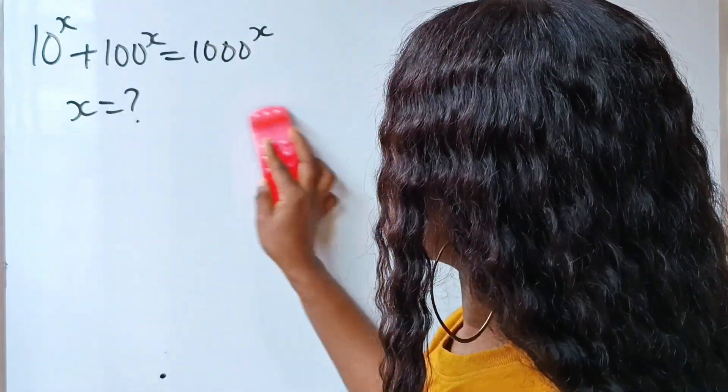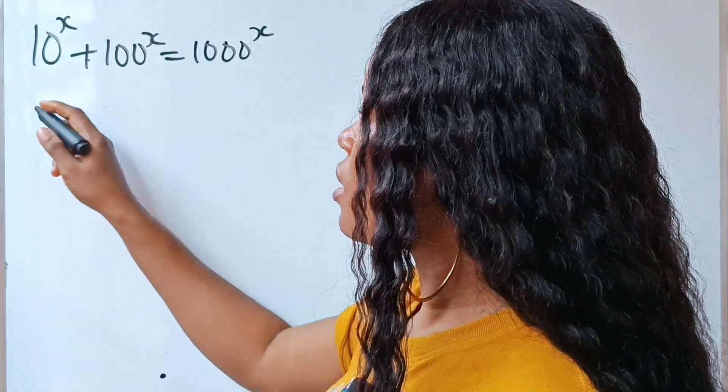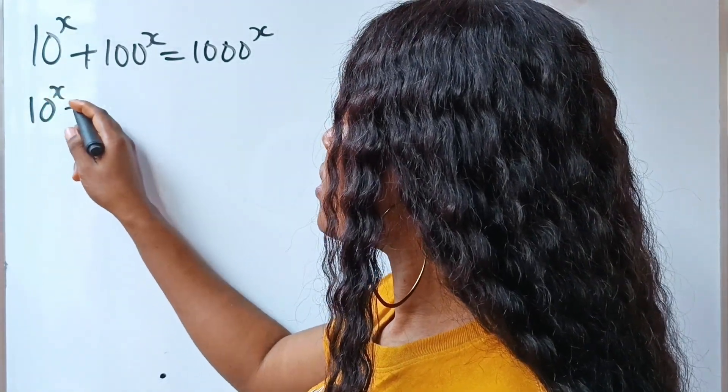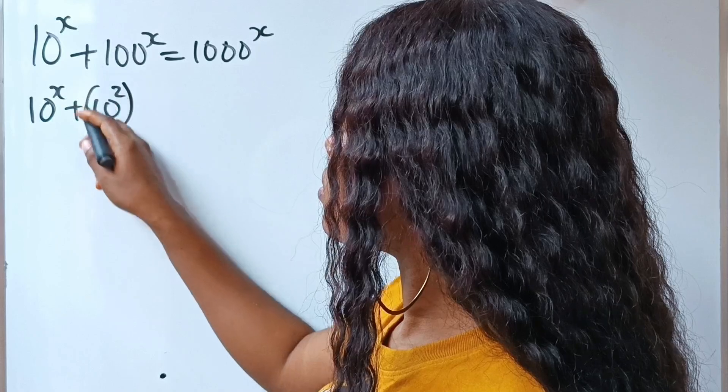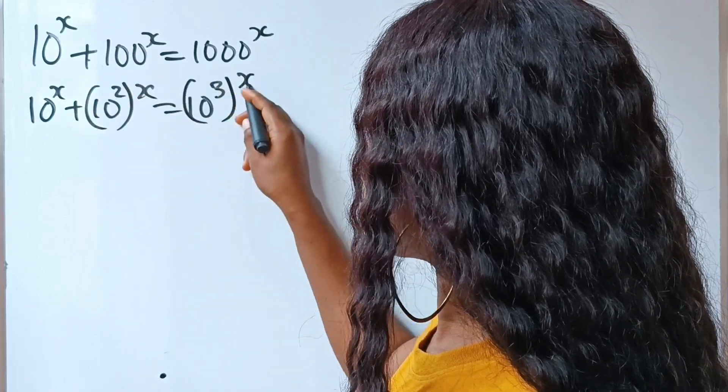The value of x is actually very easy to solve since we can put everything in base 10. So we have 10 to the power of x plus 10 squared to the power of x is equal to 10 to the power of 3 to the power of x.